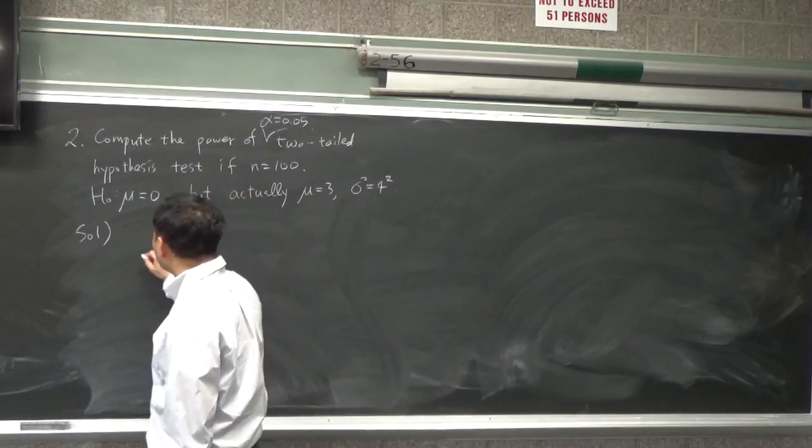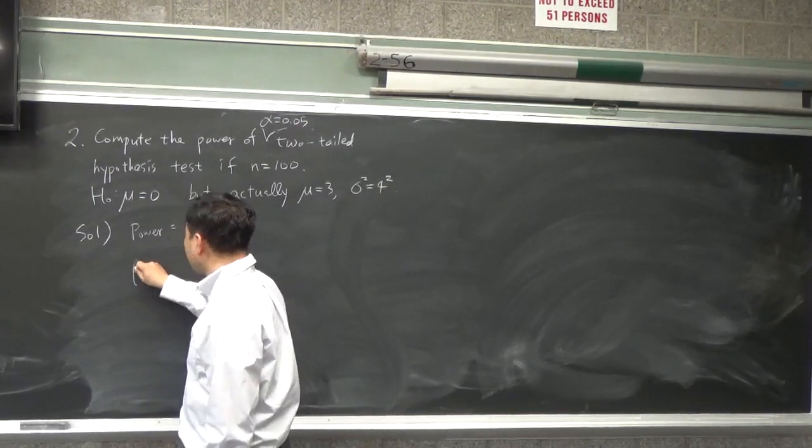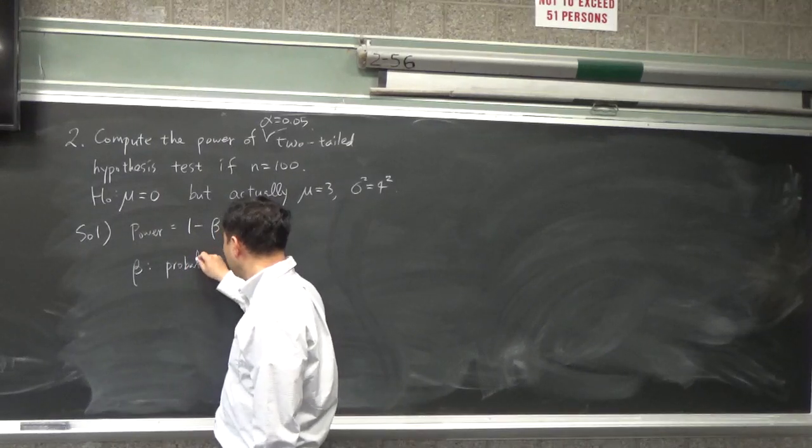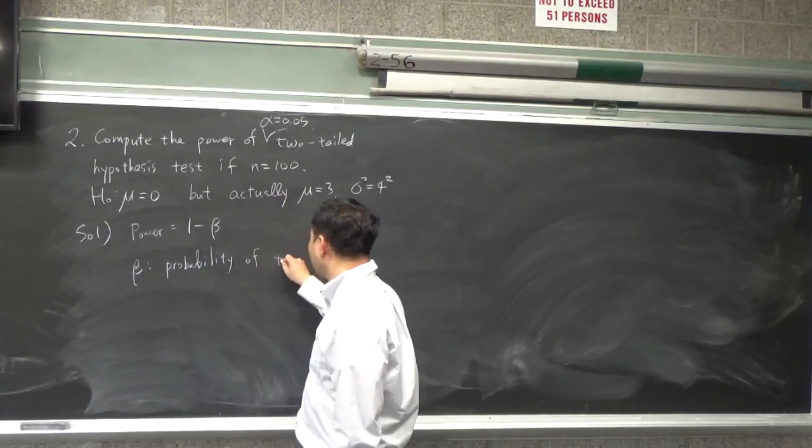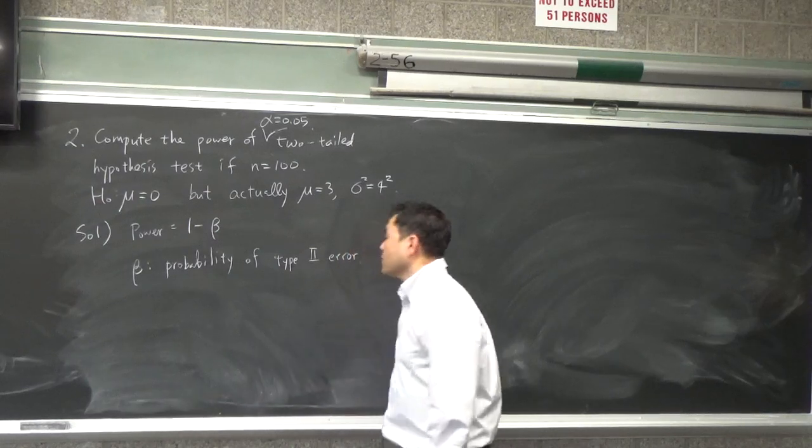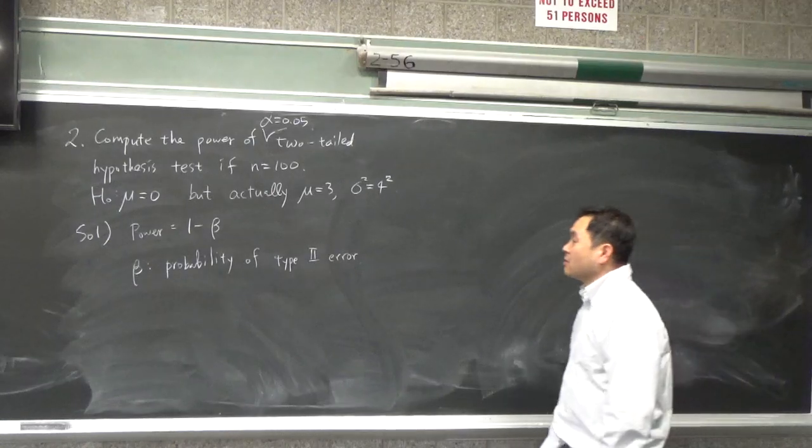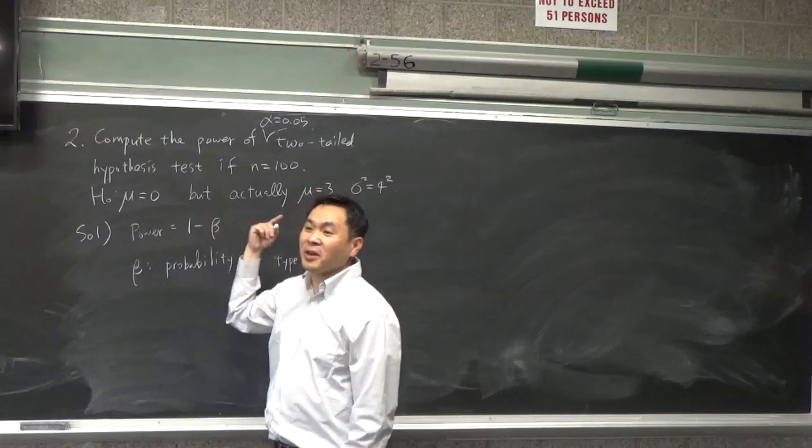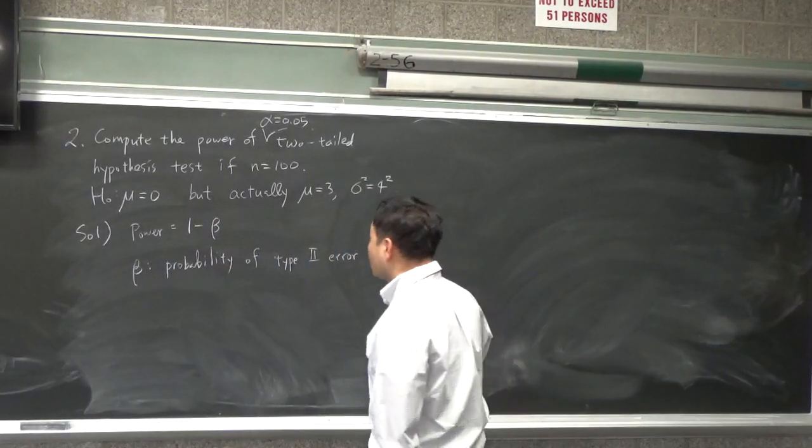Let's review what power is. Power is 1 minus beta, where beta is the probability of type 2 error. Type 2 error is that actually the null hypothesis is wrong, but you fail to reject the error. So here's what we are looking at.